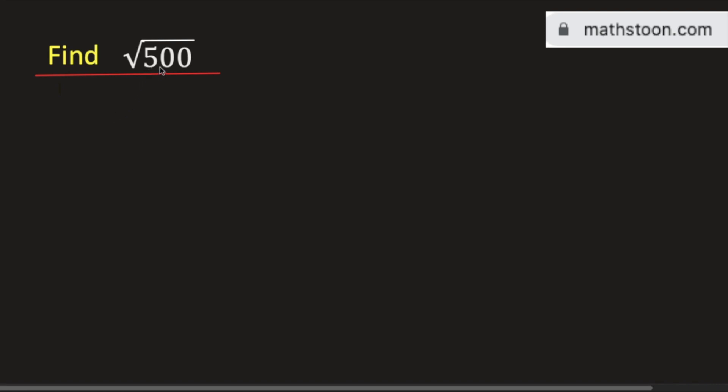In this video we will simplify square root of 500. At first we will write 500 as the product of two numbers, at least one of them will be a perfect square.